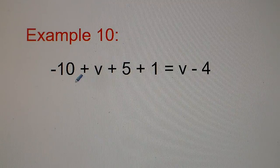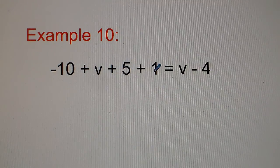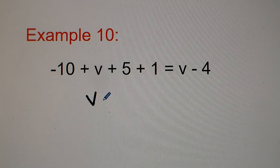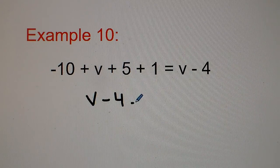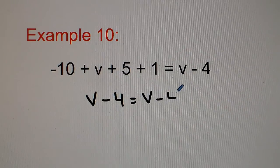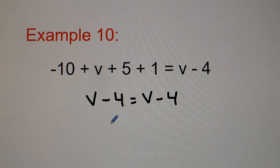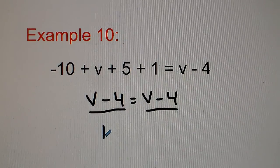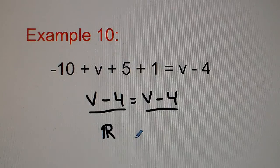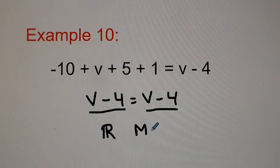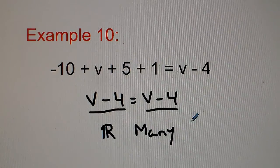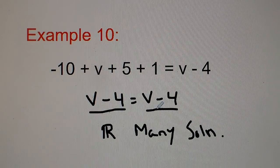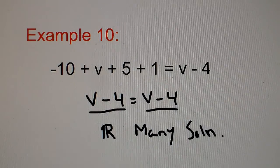Let's look at number 10. Negative 10 plus 5 plus 1 — those numbers added together give us negative 4 — so we have v minus 4 equals v minus 4. The left-hand side is exactly the same as the right-hand side, so that means it's all real numbers, or many solutions. Anytime the left-hand side matches the right-hand side, you have many solutions.